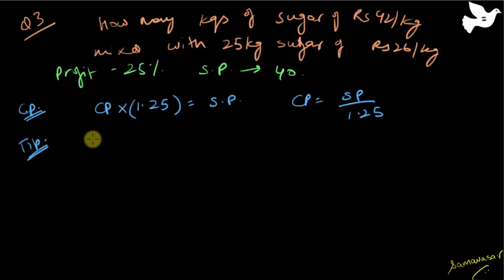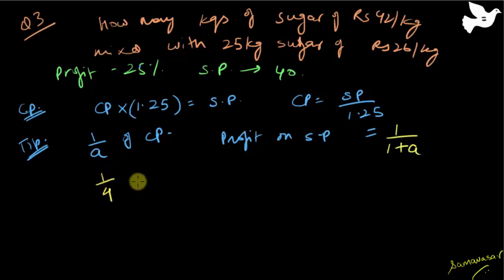But there is a tip here that I would like to give you, or a trick. Whenever I have a profit of the form 1/a of cost price, the profit on the selling price is equal to 1/(1+a). So 25% is what? 1 by 4. So the profit I am given is 1 by 4 of CP, so on SP your profit will be simply 1 by 5.